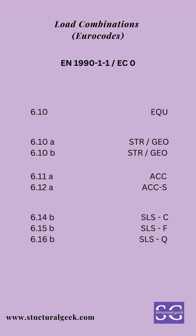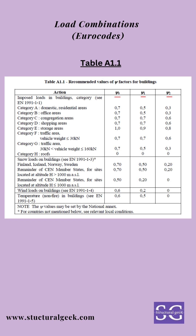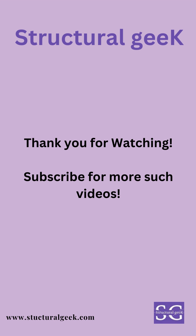These are the load combinations you need in order to design any structure as per Eurocode. The psi factors used for various load combinations like 611a and 610b can be taken from table A1.1. As you can see, depending on the category of the load and the type of variable action, the psi factors can be taken from this table. For example, for category C — congregation areas — the psi0 factor is 0.7, psi1 is also 0.7, and psi2 is 0.6, which can be applied in the respective load combinations to get the correct factor.